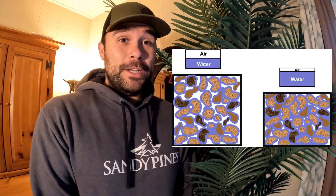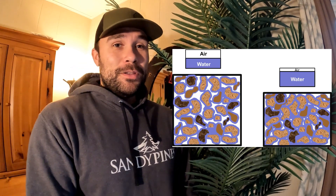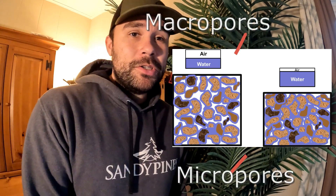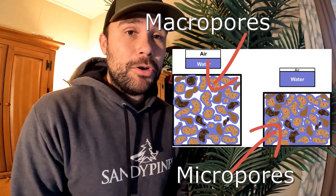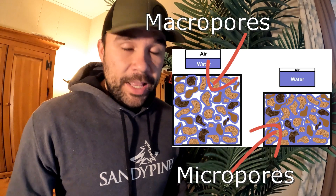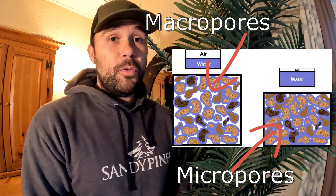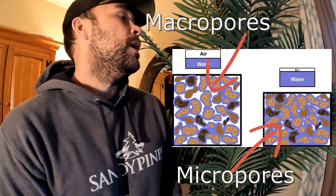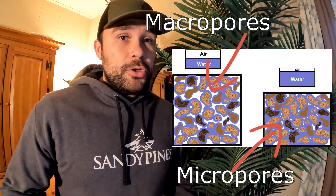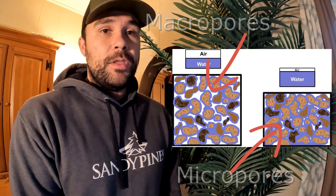Soil is 50% space, which is pretty remarkable. There are two different pores in soil: macropores and micropores. Macropores are your larger openings — these don't hold water against the force of gravity and will drain out over time. Micropores are smaller cavities which do hold water and are where your tree will get water from, though sometimes they can be so tight that the tree can't even access it.